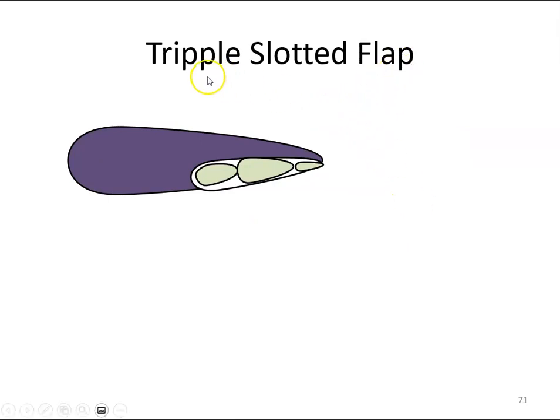Then we have the triple slotted flap, which is used quite often on large commercial aircraft. Like the Fowler flap, it extends and creates slots between the various sections of the flap, resulting in an increase in surface area.